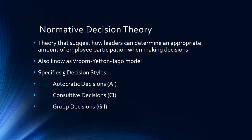The Normative Decision Theory is a theory that suggests how leaders can determine an appropriate amount of employee participation when making decisions. It is also known as the Vroom-Yetton-Jago model. The theory has five specified decision-making styles. Three notable ones are: Autocratic Decisions, where leaders make decisions by themselves; Consultative Decisions, where leaders share problems with subordinates but still decide themselves; and Group Decisions, where leaders share problems with subordinates and have groups make the decisions.